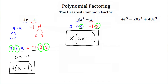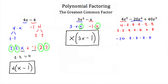Now let's look at the last GCF example, which has three terms instead of two — that's okay, you just have to find what's common in all three. For 4z to the fifth, that's 2 times 2 times z five times. For negative 20z to the fourth, that breaks down into negative 1 times 2 times 2 times 5, then z four times.